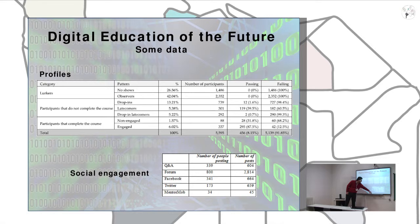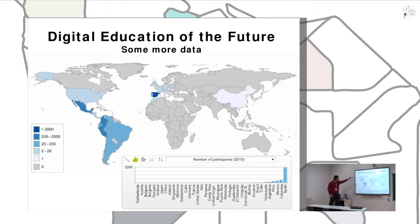We received about 5,700 posts in the forum, which received the most contributions from students. What was also interesting is a world map showing the origin of the students. Spain was the country with the largest community, but we also had significant communities from Mexico, Colombia, and Peru.